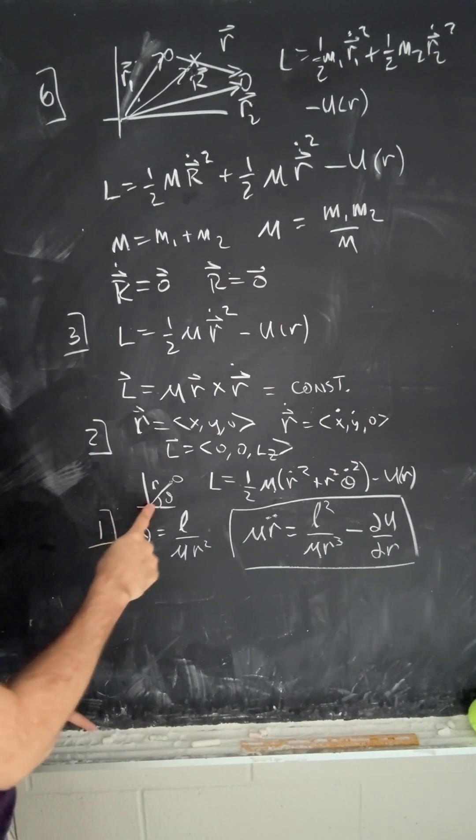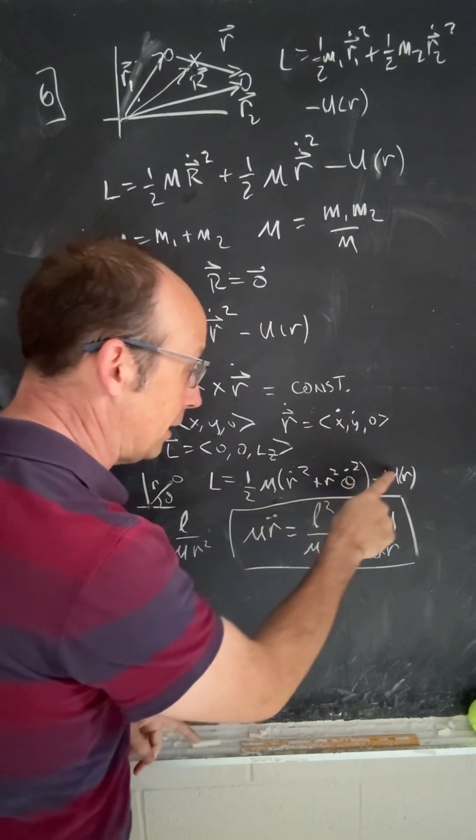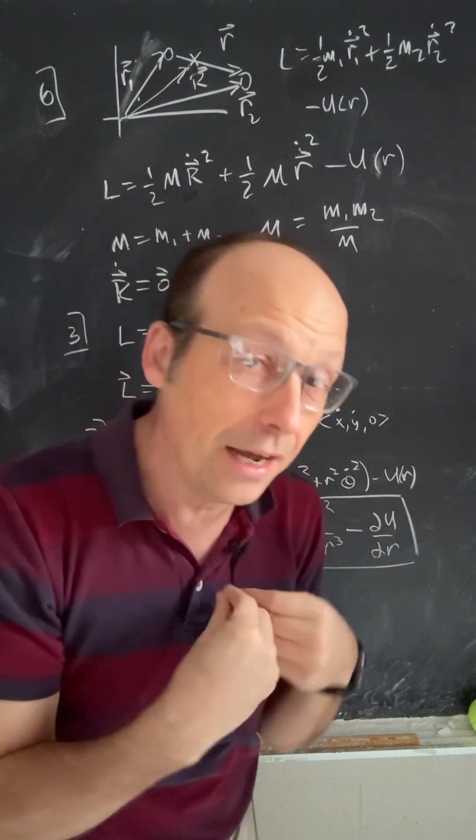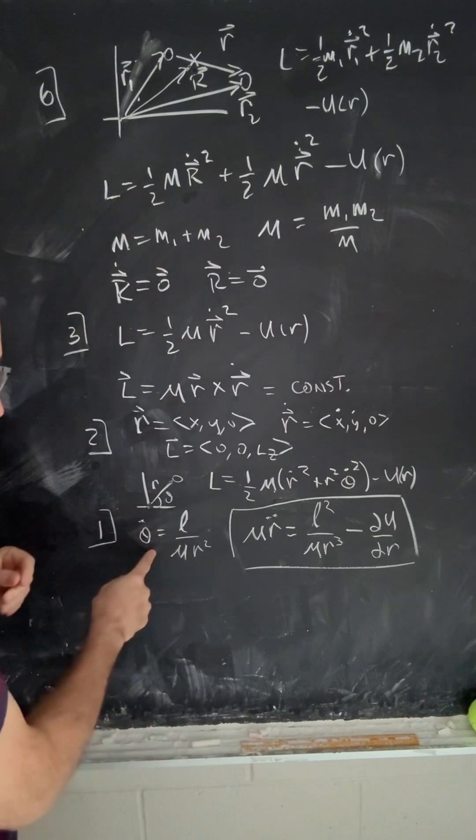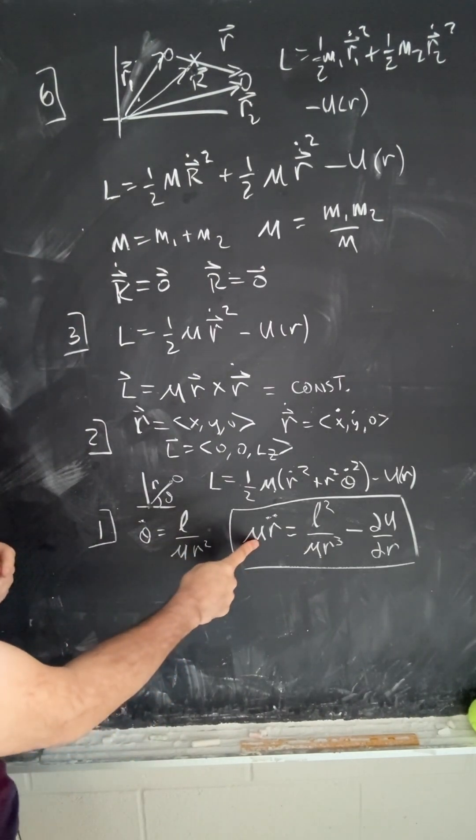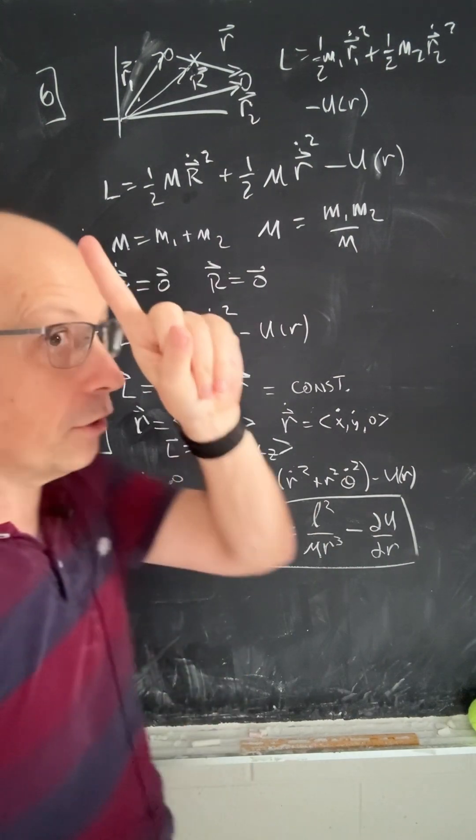And then after that, if we switch to polar coordinates, we can write the Lagrangian as this. There's no theta term in the potential, so theta dot is equal to a constant, and we can solve it for this. Plug that in right here, and there's your one-dimensional equivalent equation of motion that only depends on R.